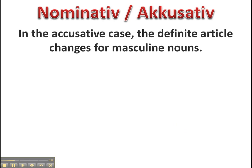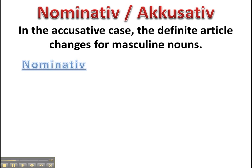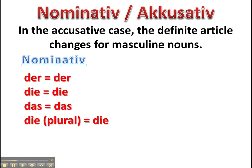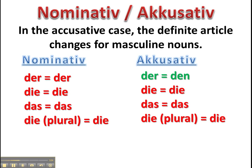Nominativ und Akkusativ. Remember, in the accusative case, the definite article changes for only masculine nouns. Definite articles in the Nominativ are Der, Die, und Das. Every German noun has a gender: masculine, feminine, or neuter. And when a word is plural in German, it is always Die. When something becomes a direct object or when it comes after an accusative preposition, it's going to change to accusative. And the only real thing to make note of there is for the definite articles — only masculine nouns will change. They will change from Der to Den.